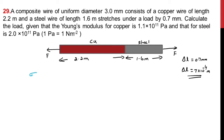The stress acting on the copper as well as the stress acting on the steel are both equal — stress on copper and steel are equal. So we can use the formula for Young's modulus: Young's modulus = stress / strain, which means stress = Young's modulus × strain.